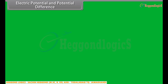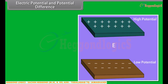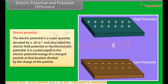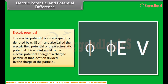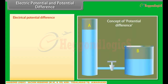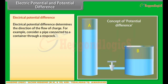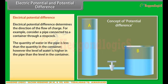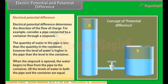Let us look at the concepts of electric potential and potential difference. Electric potential is a scalar quantity denoted by E or V. It is equal to the electric potential energy of a charged particle at the location divided by the charge of the particle. Electrical potential difference determines the direction of the flow of charge. For example, consider a pipe connected to a container through a stop cork. The quantity of water in the pipe is less than the quantity in the container; however, the level of water is higher in the pipe. When the stop cork is opened, water flows from the pipe to the container until the levels are equal. It is the potential difference that is responsible for the direction of flow.